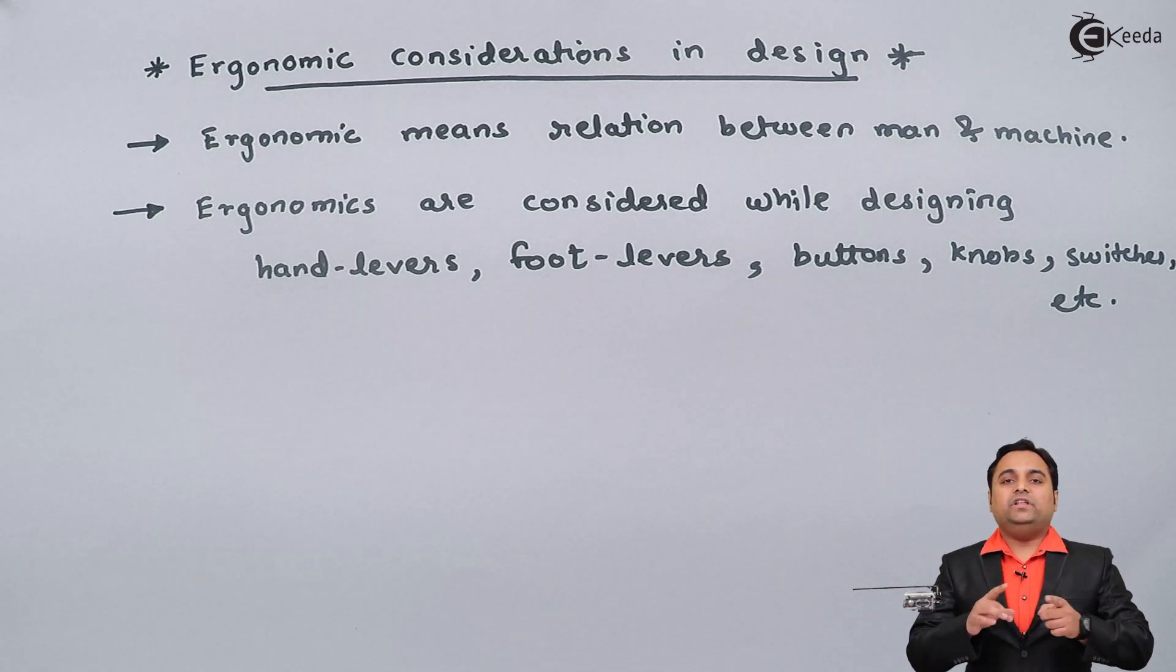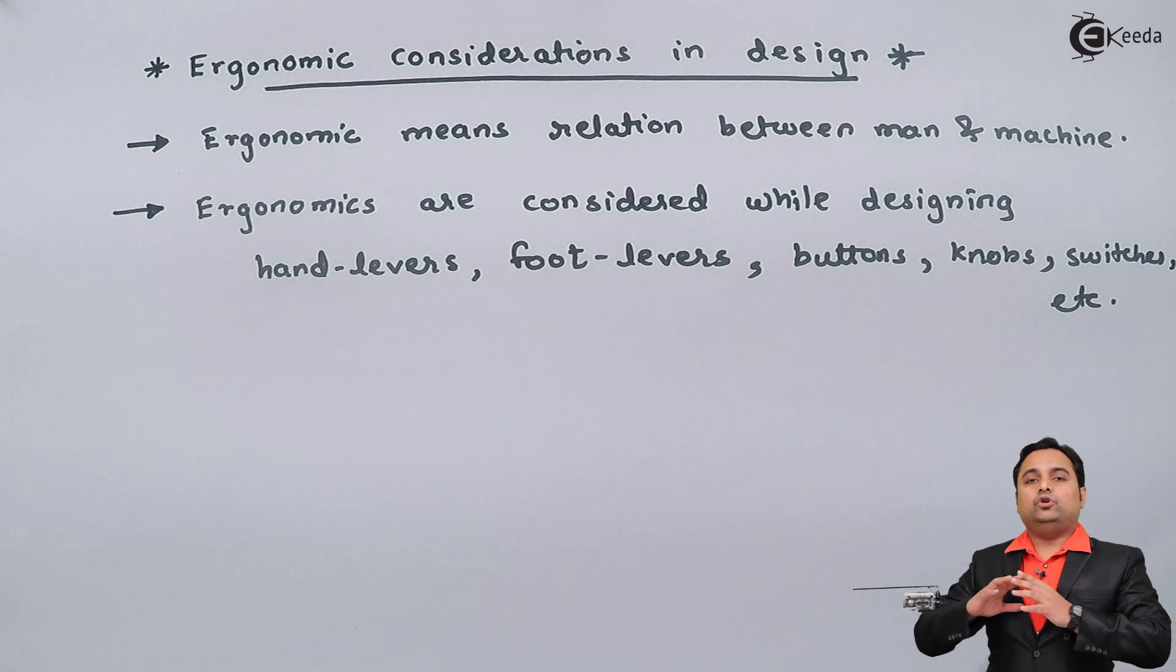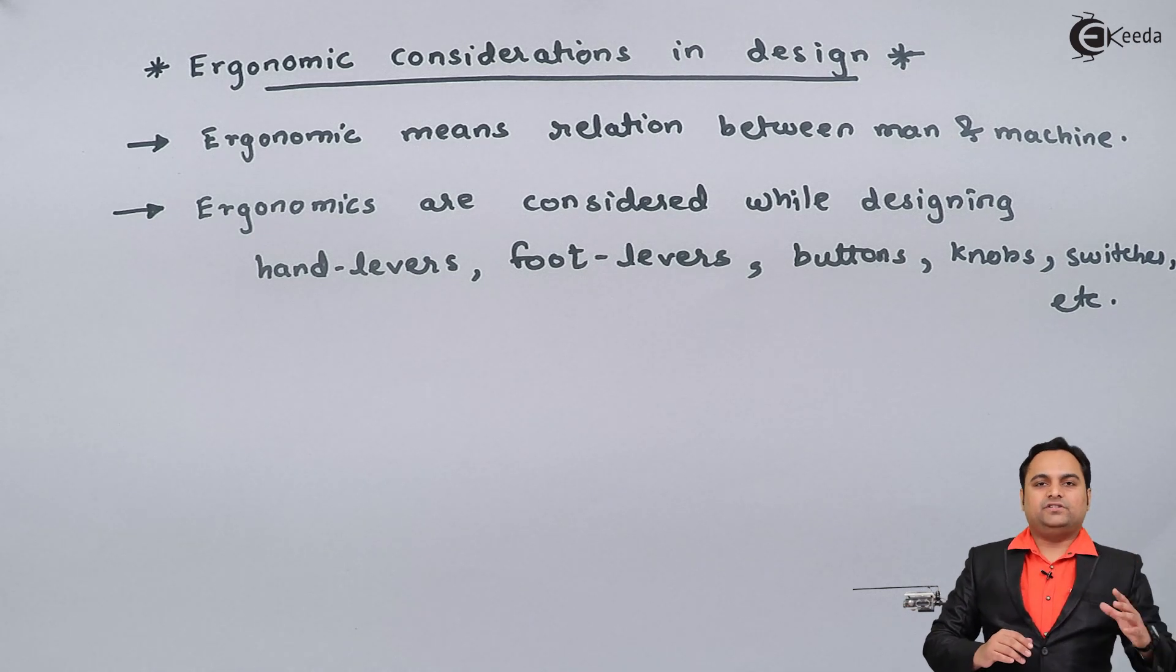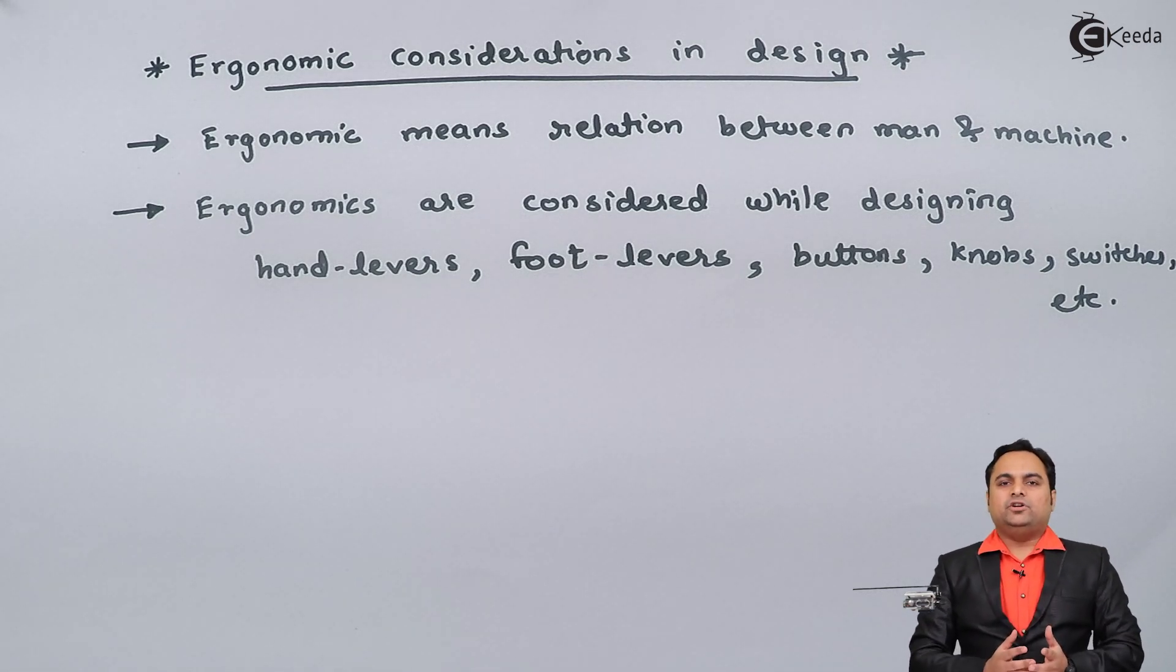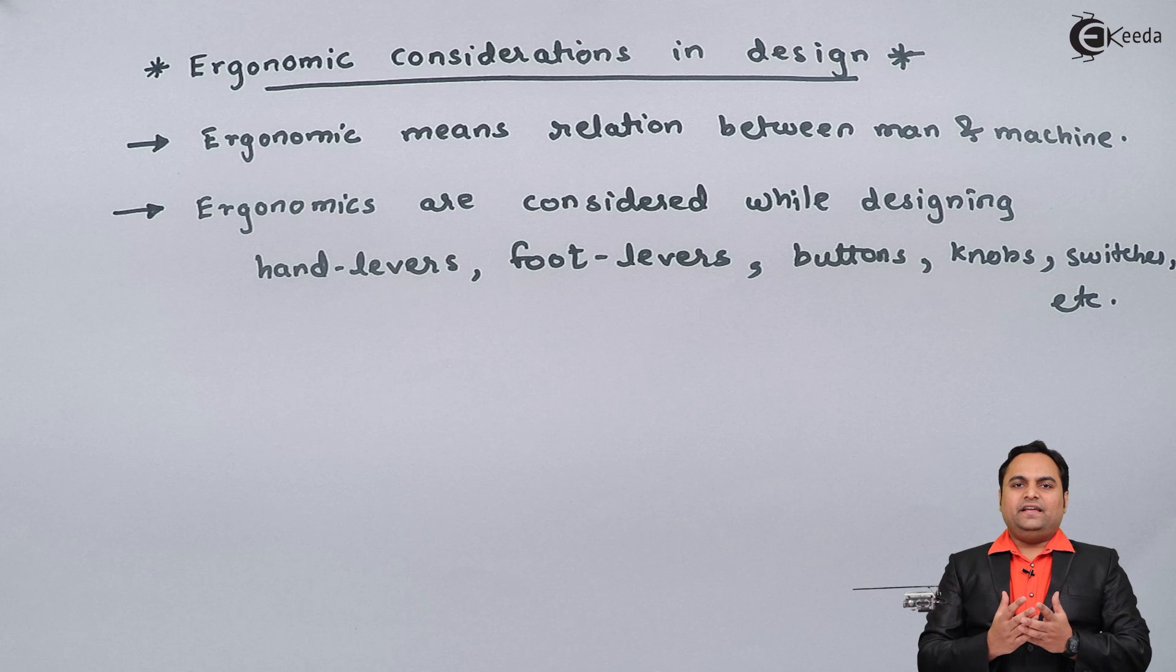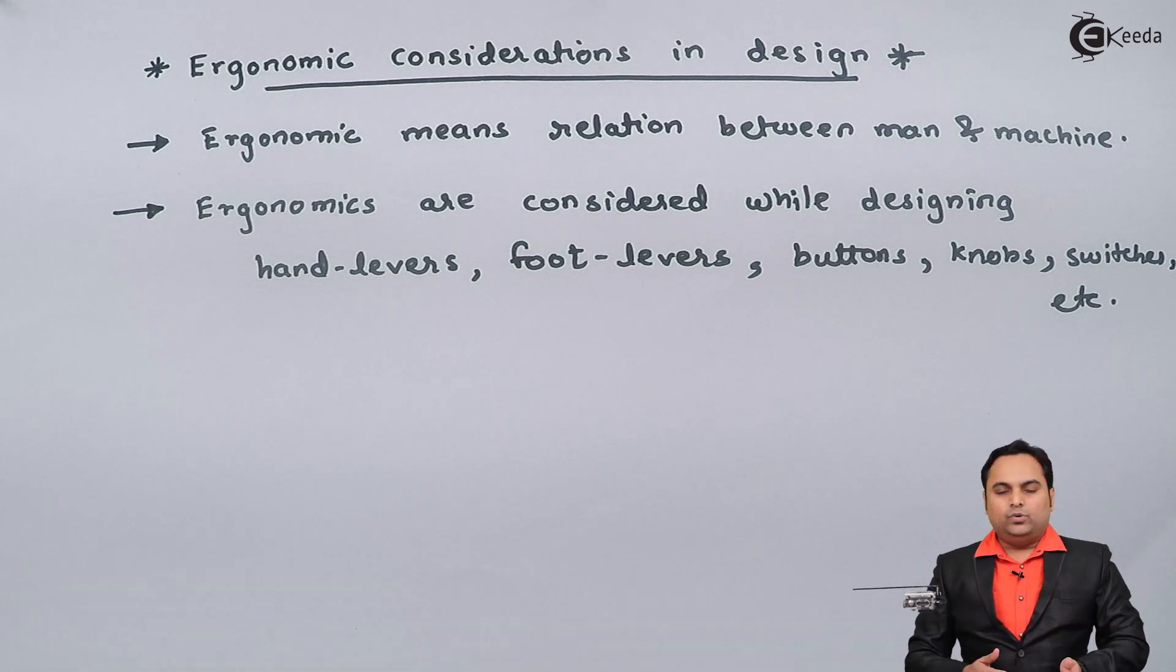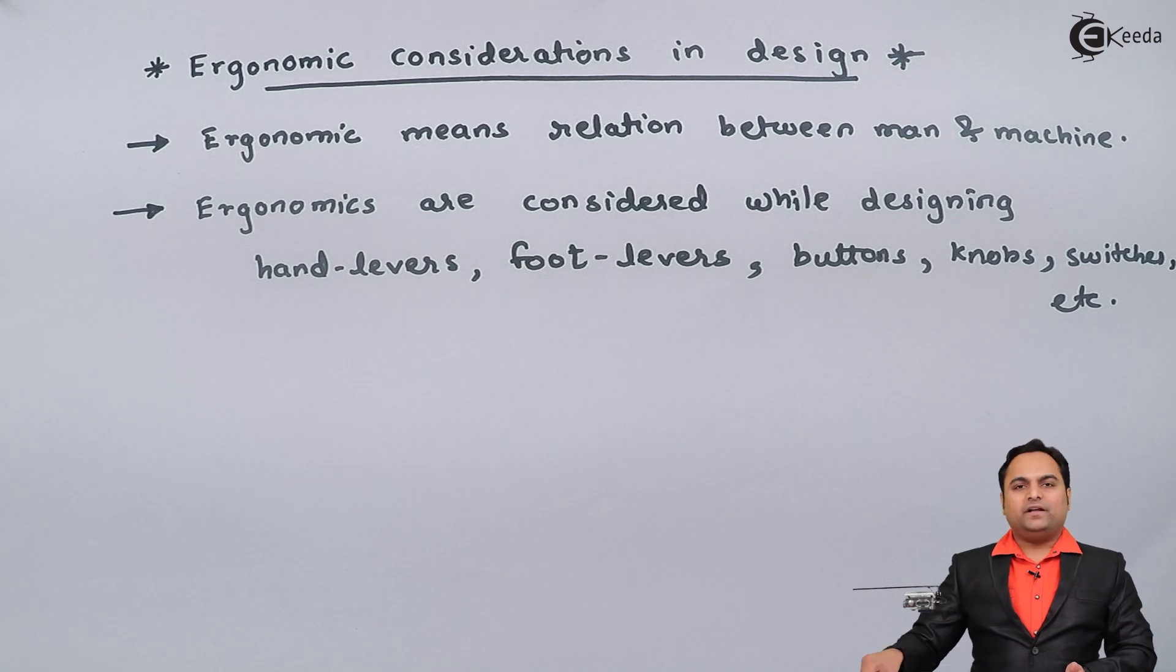It should be within our range. We should not have to extend our hand too much, we should not have to extend our feet too much. It should be within that reach. So while designing any component, if we are taking that man-machine relationship into account, that is called as ergonomic considerations.